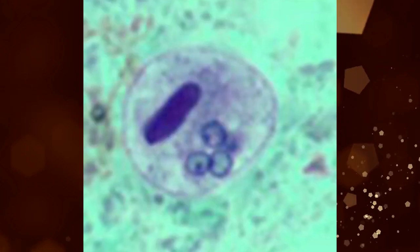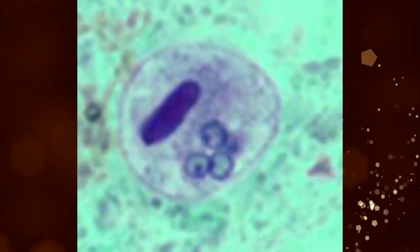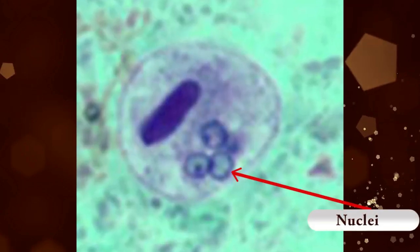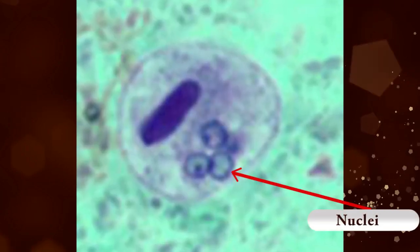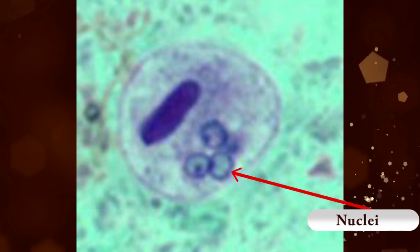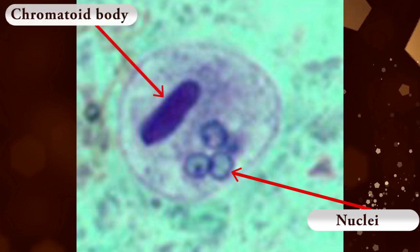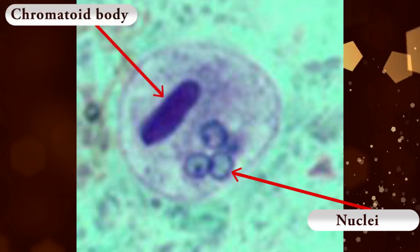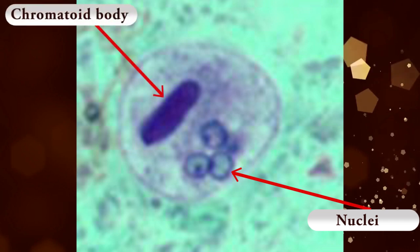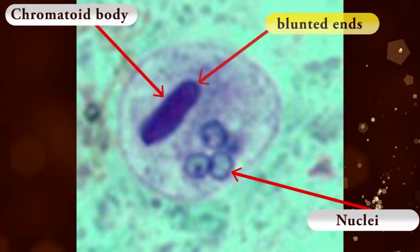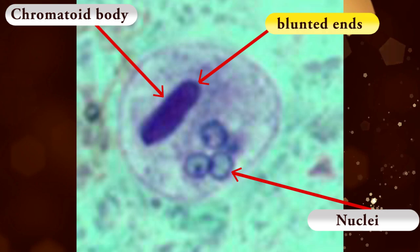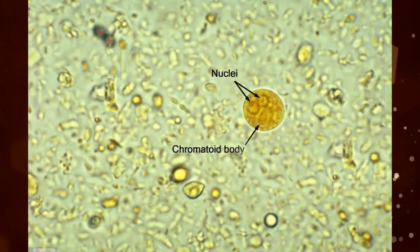Entamoeba histolytica cysts are round in shape and have up to 4 nuclei, which characteristically have a centrally located chromatoid body with typically blunted ends and uniformly distributed peripheral chromatin.